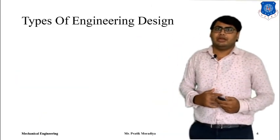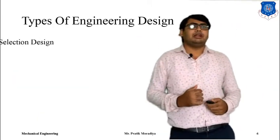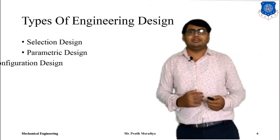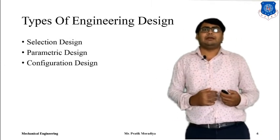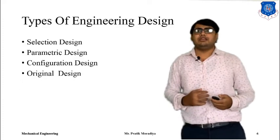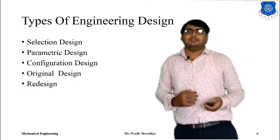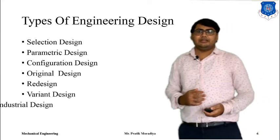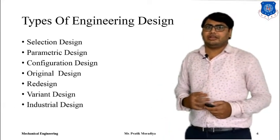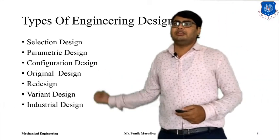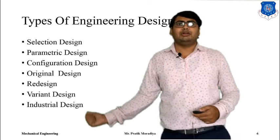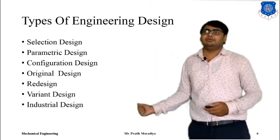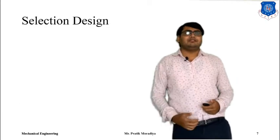Now we want to discuss different types of engineering design. The types are: selection design, parametric design, configuration design, original design, redesign, variant design, and industrial design. Let us look at each of these terms one by one.